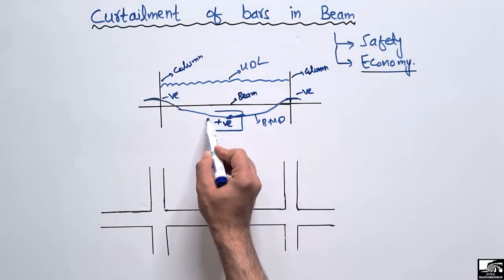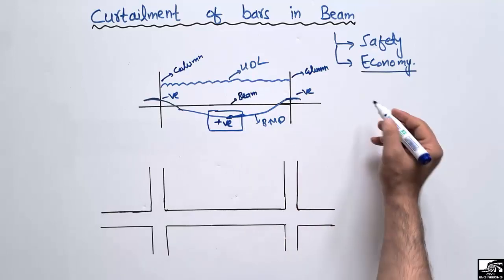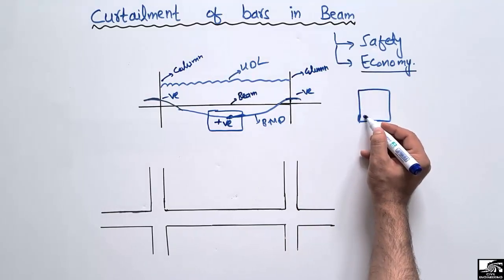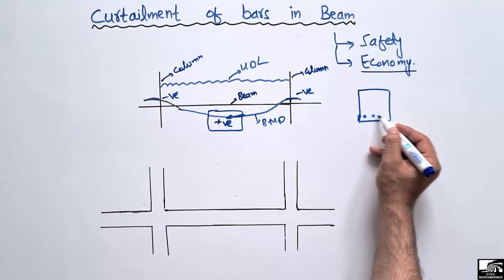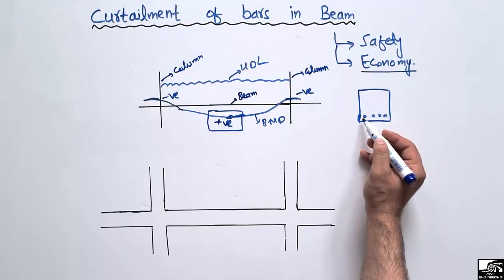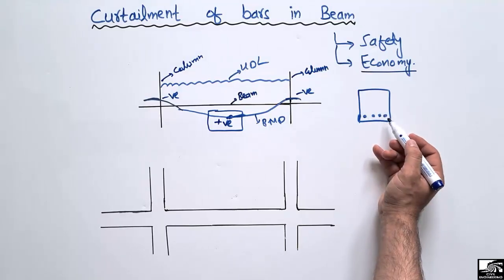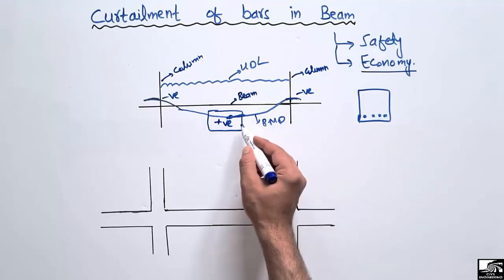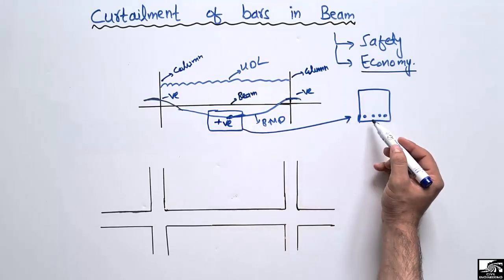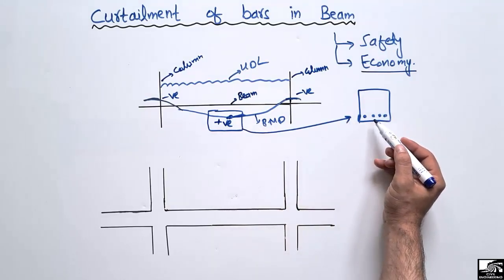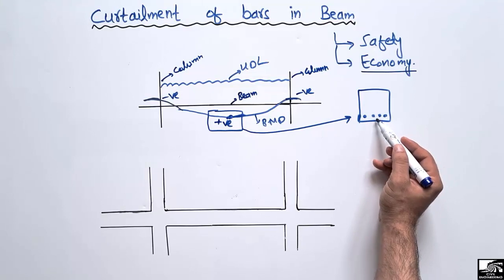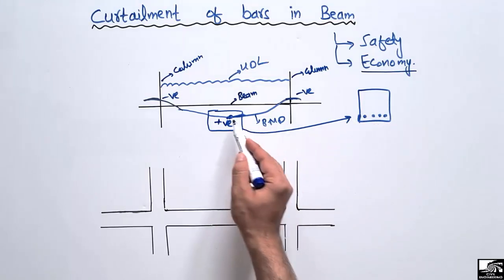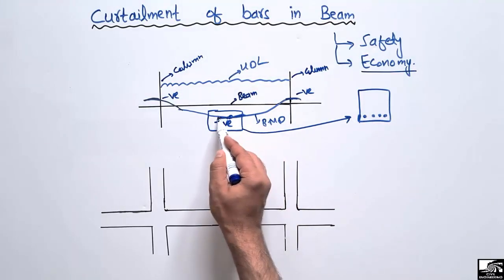For the mid-section of the beam where there is positive bending moment, the reinforcement will be provided at the bottom of the beam because the tensile stresses are maximum at the bottom. So we provide the steel bar at the bottom section in order to resist the tensile stresses and the bending moment which occurs at the bottom portion of the beam.